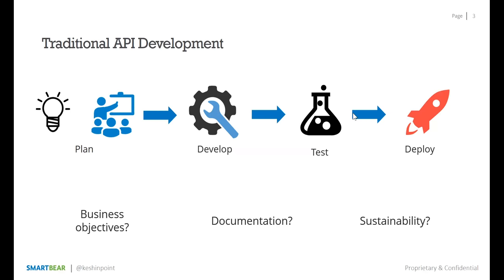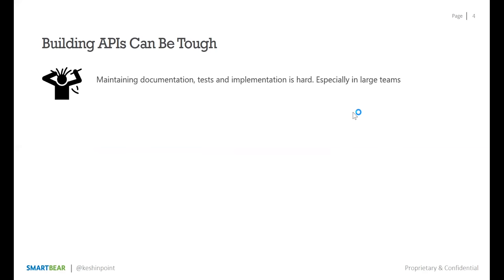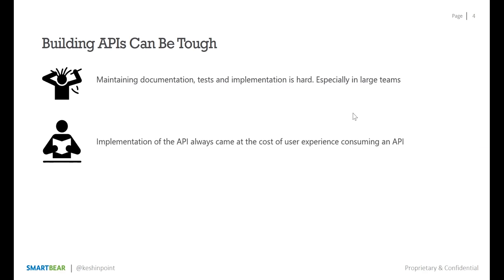APIs are now mission critical, and you need to think of them as driving your product portfolio forward. With the traditional quick-build approach, there are a couple of problems. It becomes extremely hard to maintain documentation, tests, and implementation. Your APIs are always bound to change — that's the nature of any product. As your teams grow with more developers, testers, and DevOps people, your business logic and API function will change, impacting your QA strategy and documentation teams.